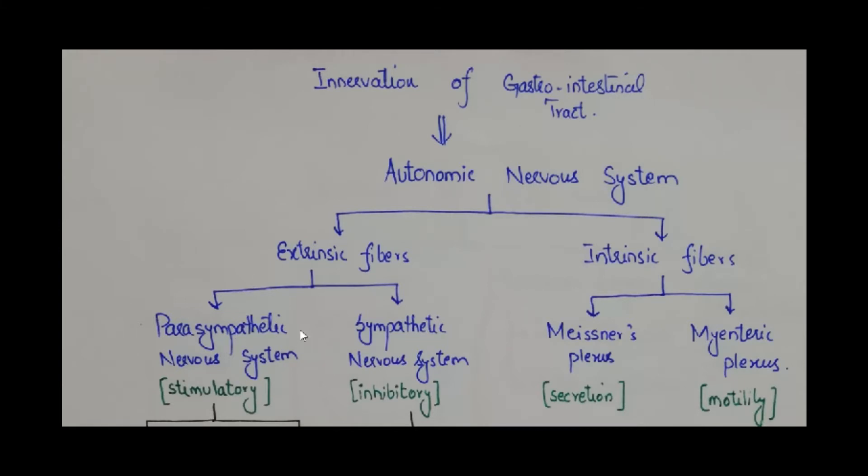Talking about the extrinsic part, it is further divided into parasympathetic nervous system and sympathetic nervous system, whereas the intrinsic part of the autonomic nervous system constitutes Meissner's plexus which is present in the submucosa and the myenteric plexus which is present in the muscular layer of the gastrointestinal tract.